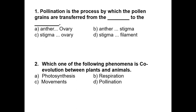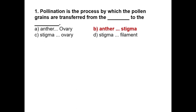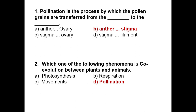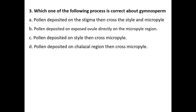Answers: Question 1 answer is b — anther to stigma, because pollination is the process by which pollen grains are transferred from the anther to stigma. Question 2 answer is d — pollination, as discussed in the theoretical session. Question 3: Which process is correct for gymnosperms? Option b: pollen deposited on exposed ovule directly on the micropyle region — that is the correct answer for gymnosperms. Question 4: In herkogamy, the style is reflexed away from the stamens — such condition is present in option d: Gloriosa superba.